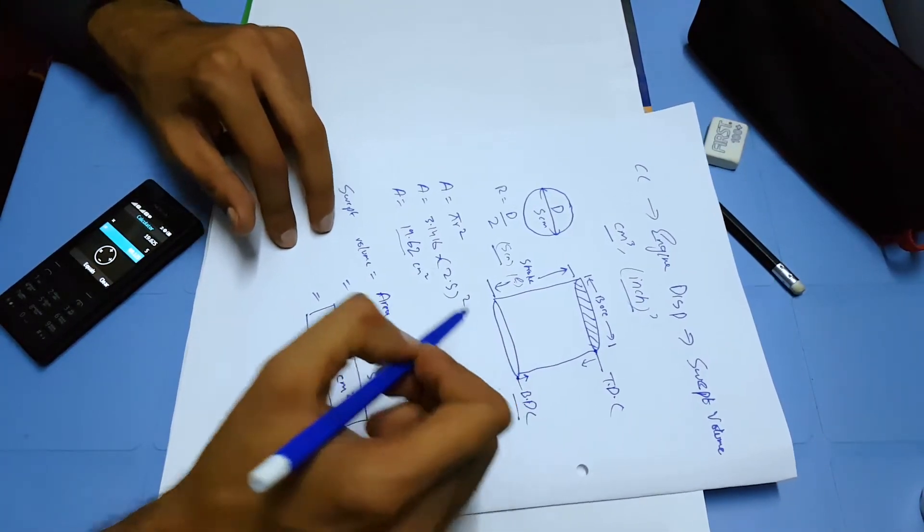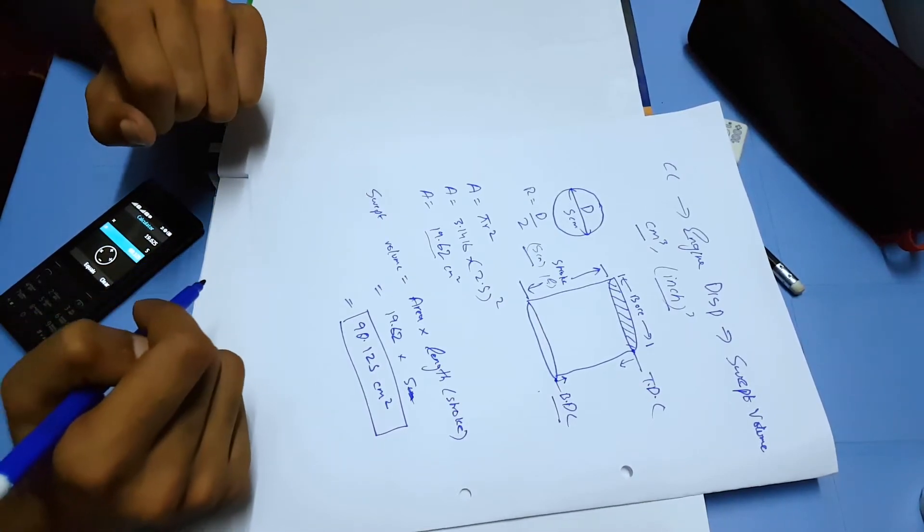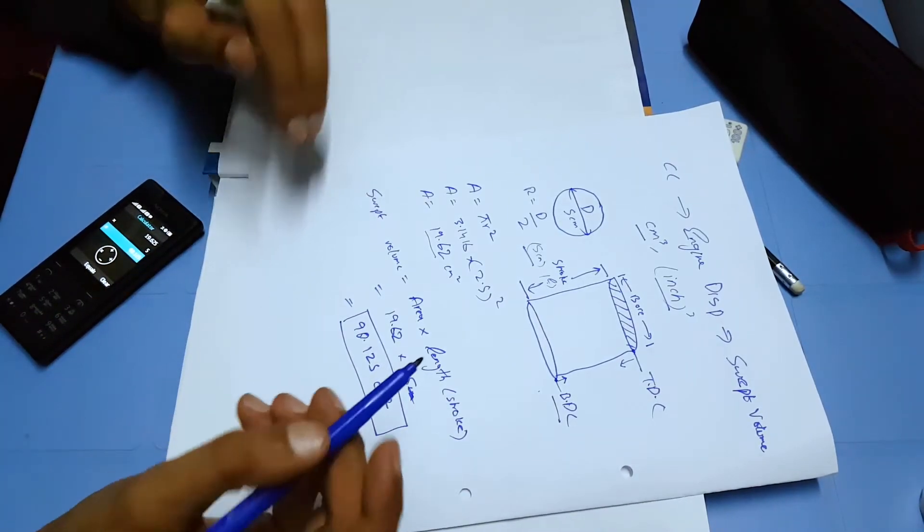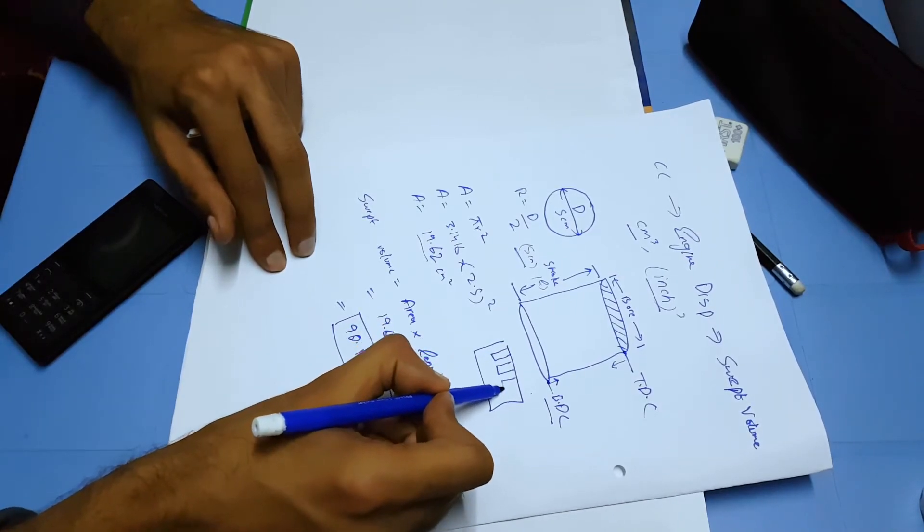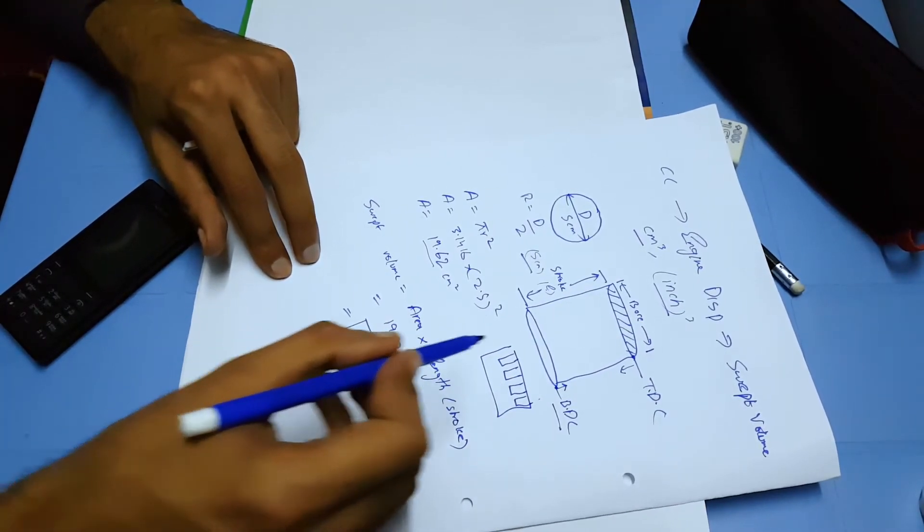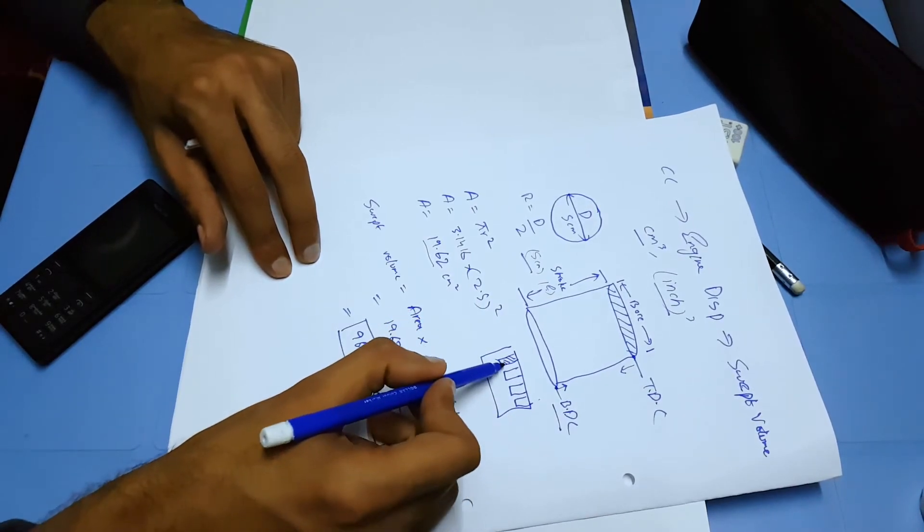For example, if you have an engine with three cylinders or four cylinders - one, two, three, four - this value is just for one cylinder. In order to find the total for all four, all you have to do is